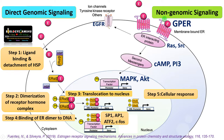Recent studies suggest there is a crosstalk happening between non-genomic signaling and direct genomic signaling pathways. So this is about the direct genomic signaling and non-genomic signaling mediated by estrogen hormone and estrogen receptor. Hope you understand the pathways. Thank you so much for your support. You are with biologyexams4u.com.